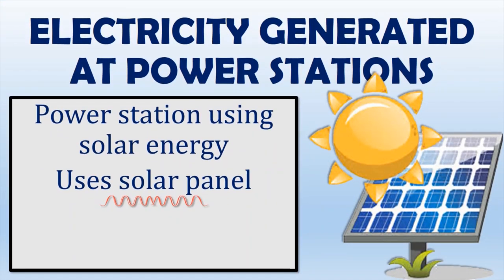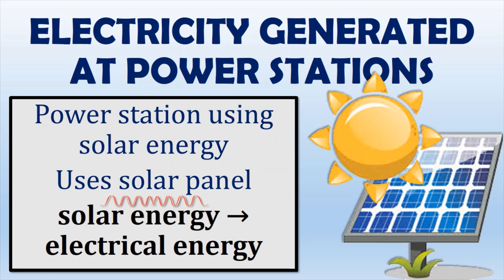There are different types of power stations used to generate electricity. For example, solar panels focus and collect sunlight to generate steam, which feeds a turbine to generate electricity. We can simplify the energy conversion as: solar energy converts into electrical energy. Large fields of sun-tracking mirrors are aligned in a north-south orientation to maximize sunlight capture.